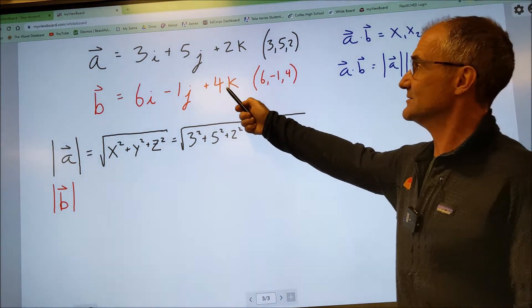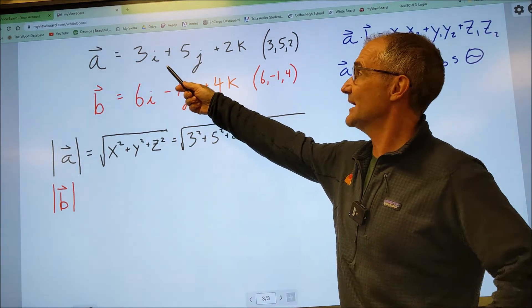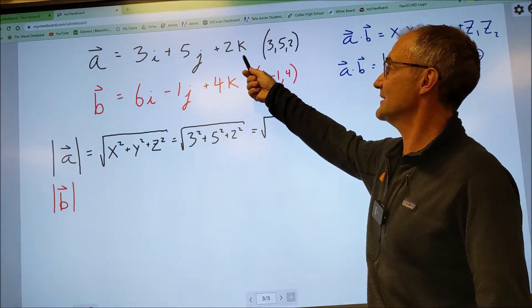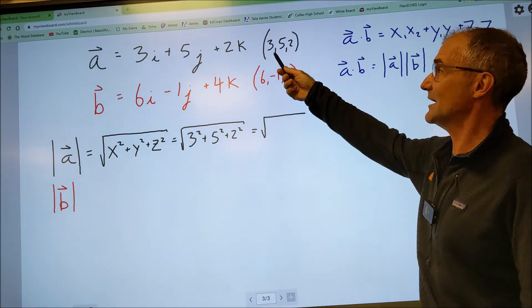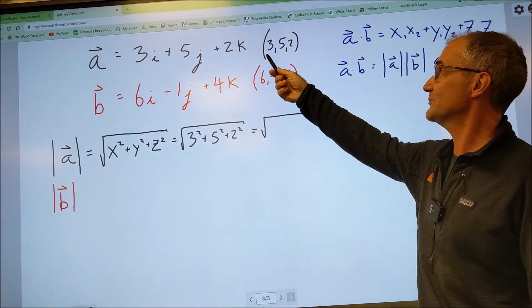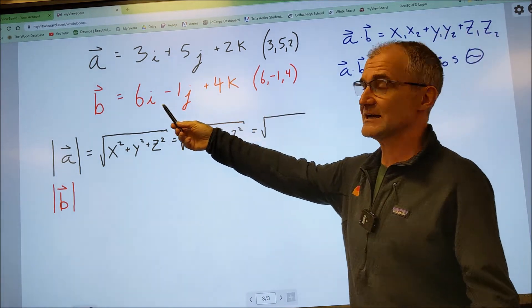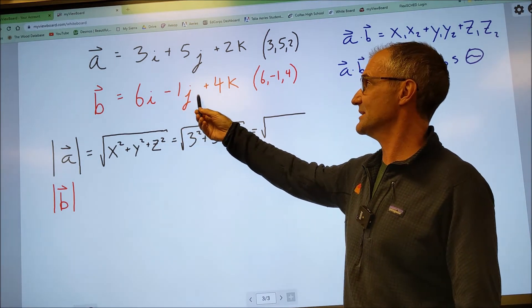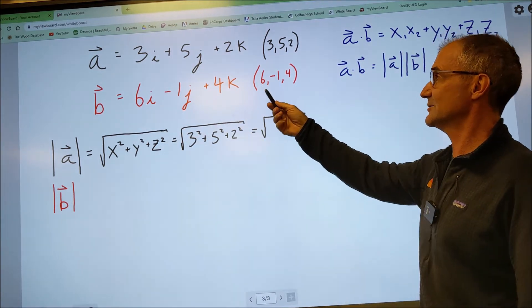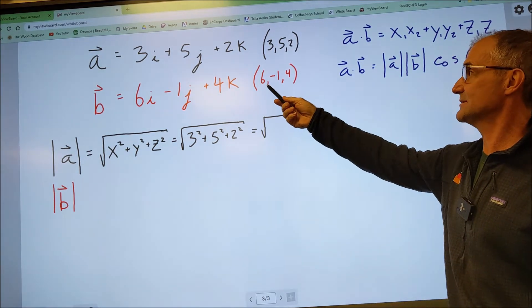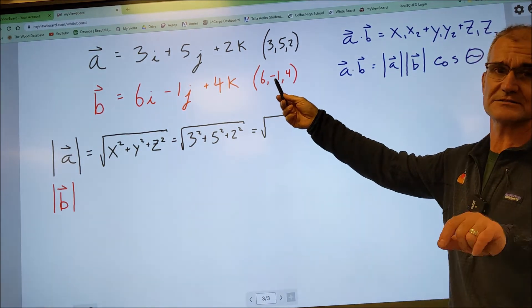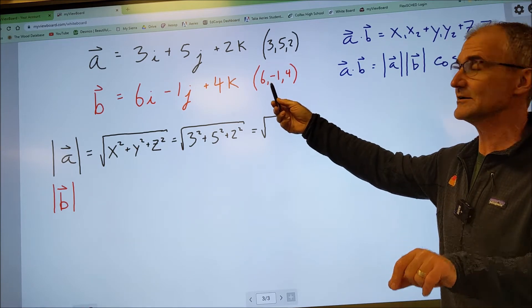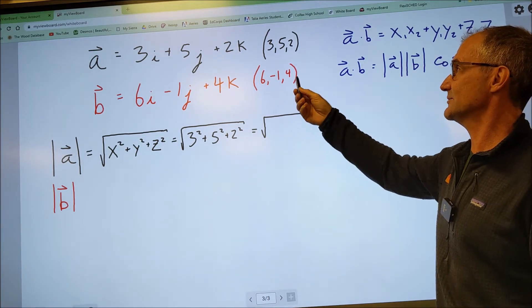So to start with, I have two vectors here. Vector A is 3i, 5j, plus 2k. It could also be looked at as a position vector of 3, 5, 2. And then second vector in my example, vector B, 6i minus 1j plus 4k. Again, you could represent that as a position vector with coordinates X, Y, and Z starting at the origin of 0, 0, 0, traveling to 6, negative 1, 4.